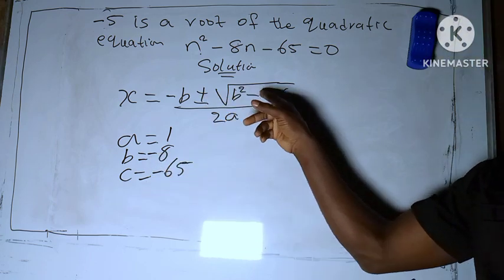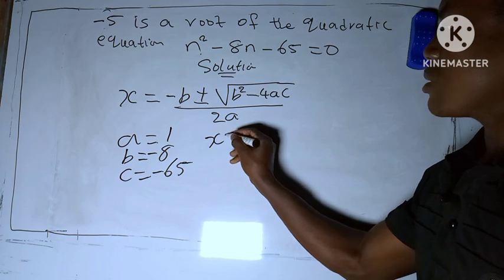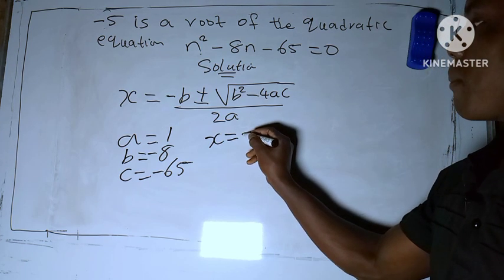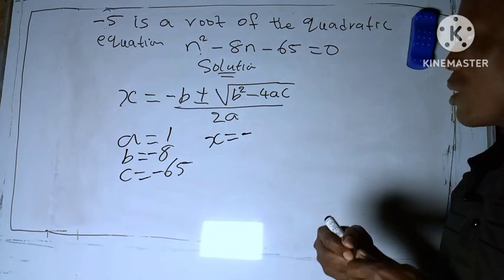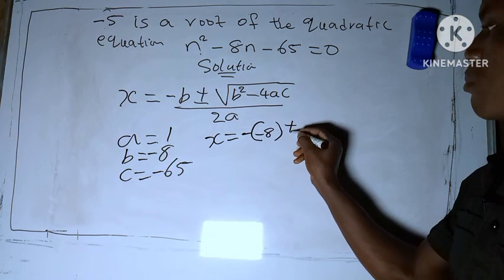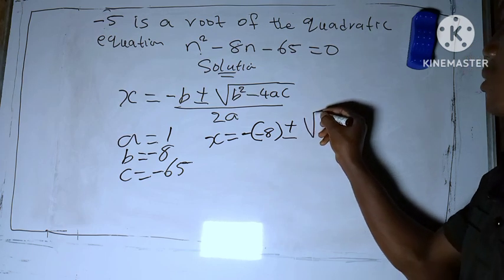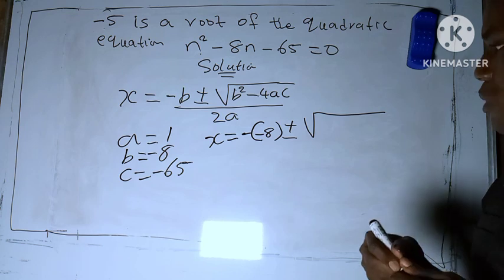Okay, so let's substitute them in this equation. So x = -(-8) ± √((-8)²). Our b here is -8, right, so bracket open: -(-8) ± square root, our b here is -8.